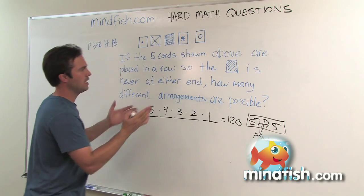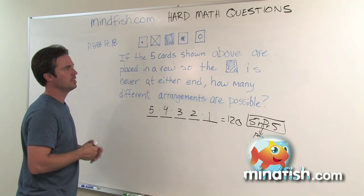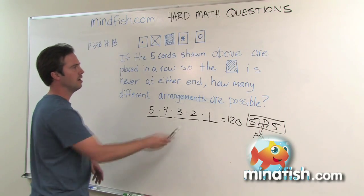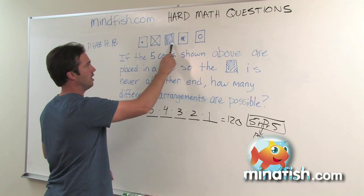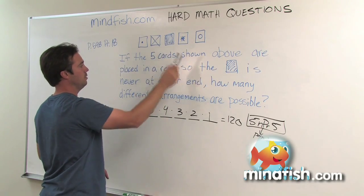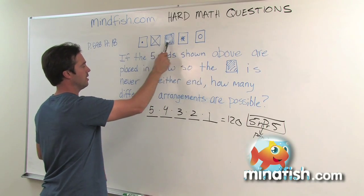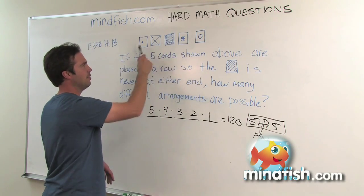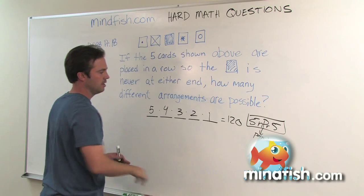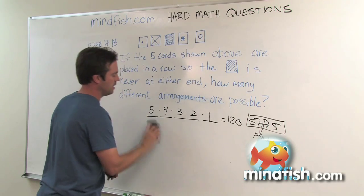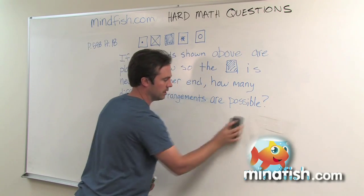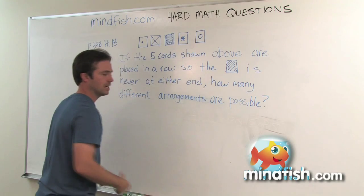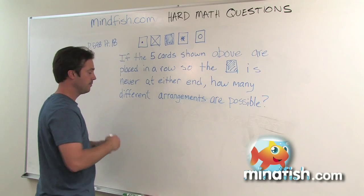Unfortunately it's not that easy, because it says in this problem that the colored box can only go here, here, or here — it cannot be on either end. So unfortunately we can't approach this as a straight permutation question; we have to look at it a little differently.